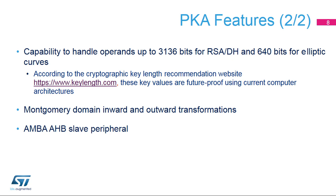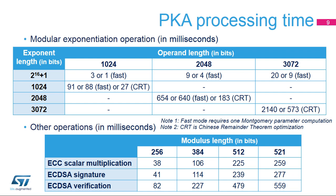Here are the modular exponentiation processing times using different exponent and operand sizes. Figures with the 'fast' indication require the application to perform a Montgomery parameter computation, as this information is needed to run the fast operation. The Montgomery parameter can be reused for several computations in a row, making overall operations more efficient if repeated many times. Montgomery multiplication overhead: 1,024-bit +0 ms, 2,048-bit +3 ms, 3,072-bit +8 ms.